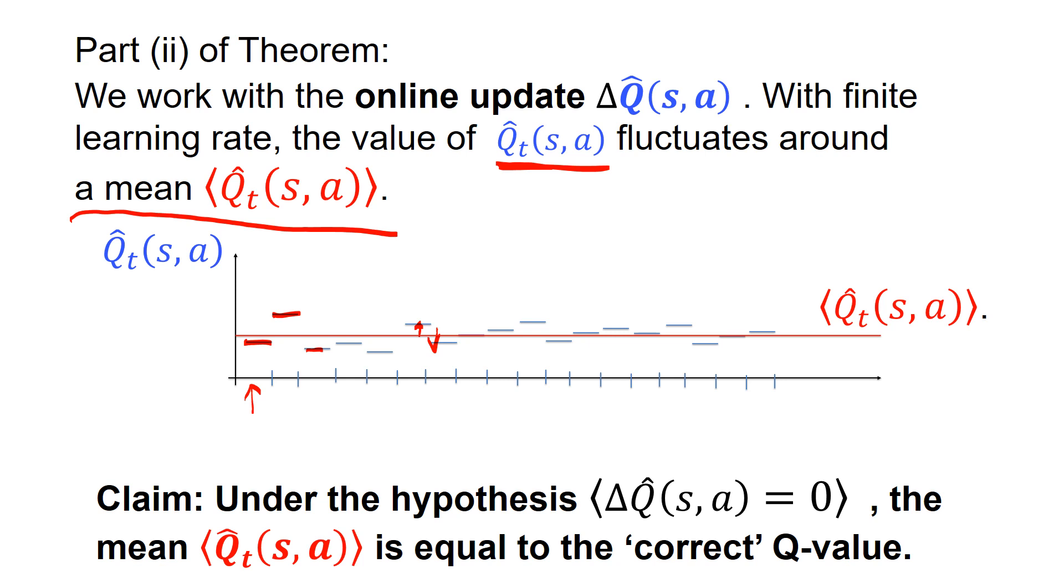And now the claim is that if these going up and going down is zero on average in the temporal sense, temporal average, then the mean is the correct Q value.